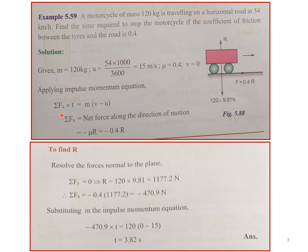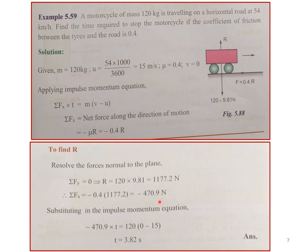The net force in the direction of motion is −μR. Applying ΣFy = 0 gives R = 120 × 9.81 N. Substituting, the net force is 470.9 N. Using the impulse-momentum equation: −470.9 × t = m×v − m×u, where u = 15 m/s and v = 0. Solving, the time required to stop the motorcycle is 3.82 seconds.